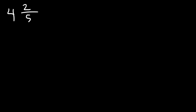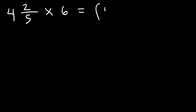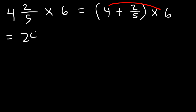Now let's go over the same four examples using the second method. Starting with 4 and two-fifths times 6: expand the mixed number as a whole number plus a fraction, writing it as 4 plus two-fifths, then multiply by 6. Distribute: 4 times 6 is 24, and then multiply two-fifths times 6, which is 2 over 5 times 6 over 1.